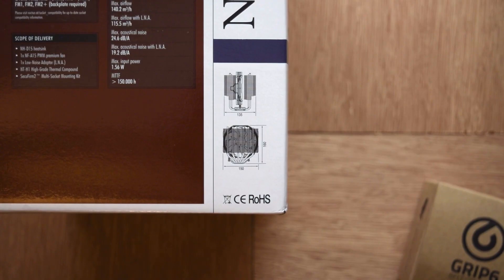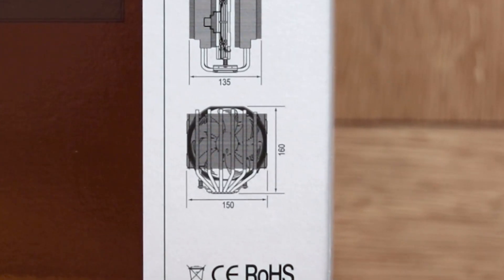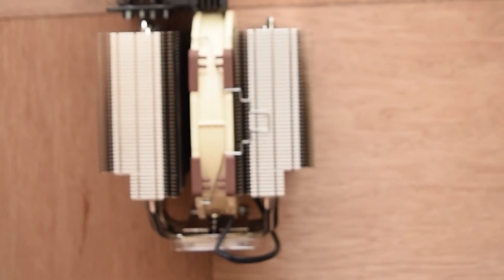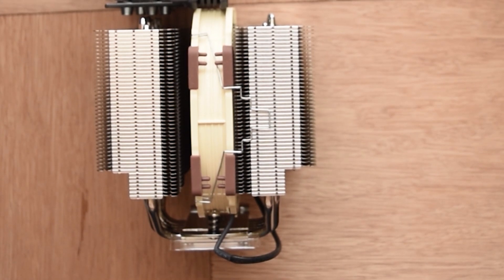I purchased the D15S over the D15 because of its focus on compatibility. With a height of 160mm including the fan, it is the maximum height cooler that my case will fit. They've also removed some fins on the bottom of the cooler so that you won't run into any RAM clearance issues.